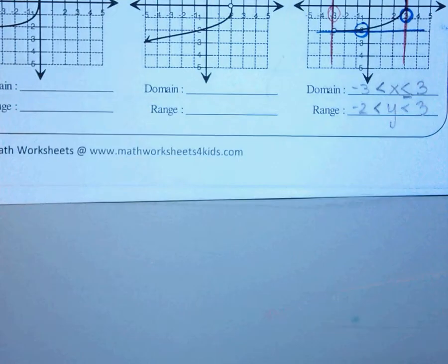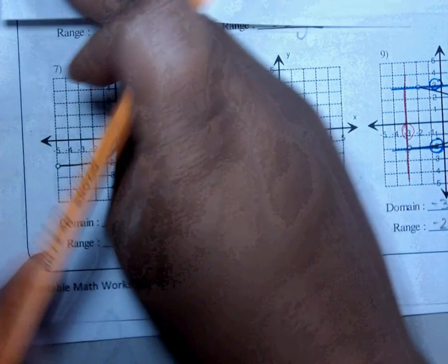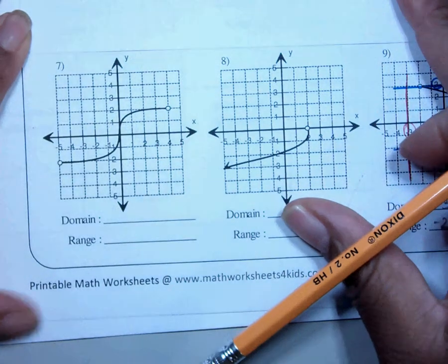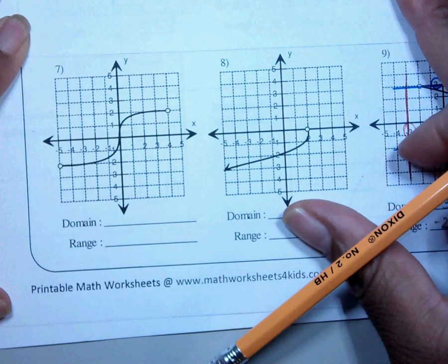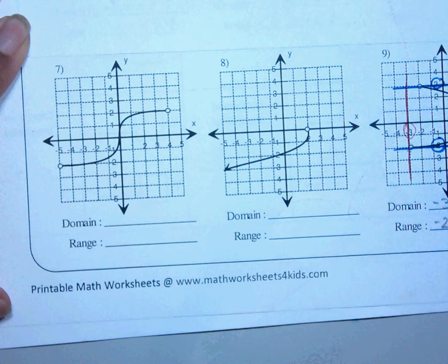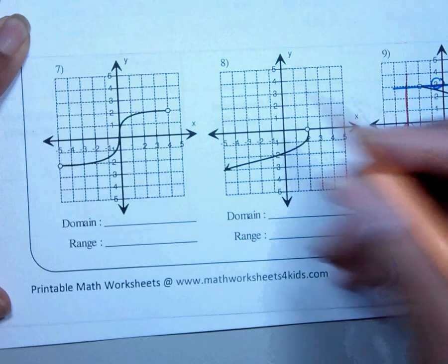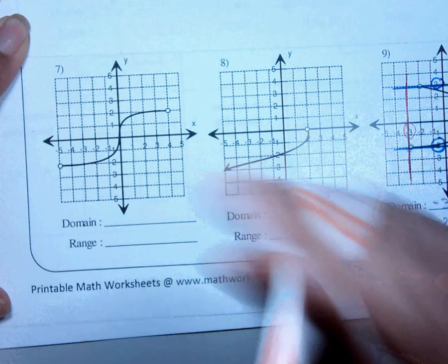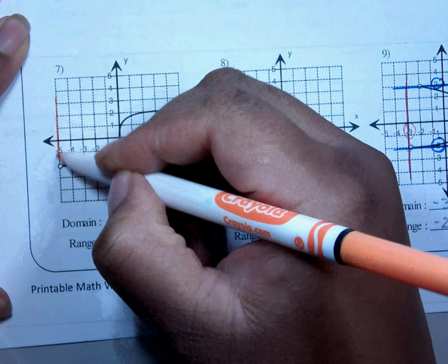I've done number four for them. Now I'm going to do number seven for the video so they can have it as you finish four. Third period, after you finish four, go ahead and do number seven. I'm doing number seven for those at home that are watching the video.